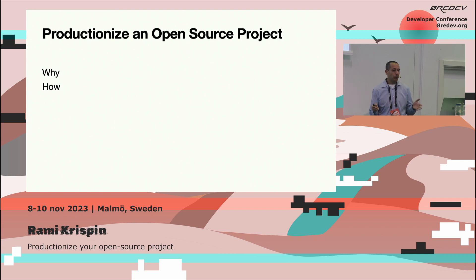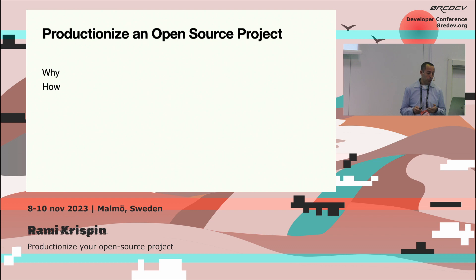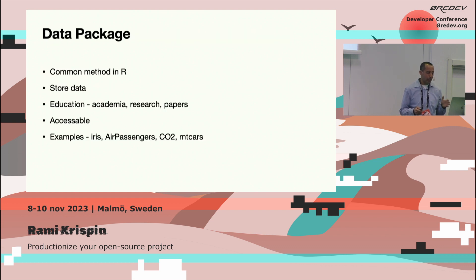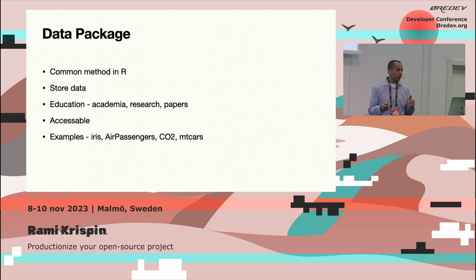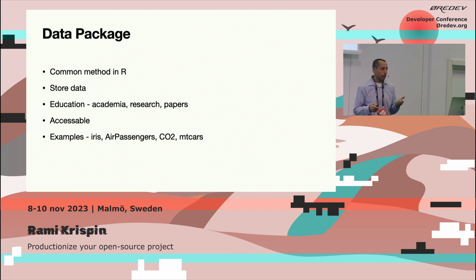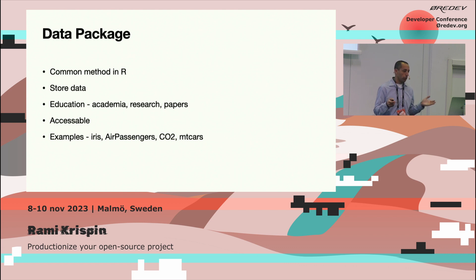The agenda is simple: we'll talk about why you want to productionize your open source project — using tools like Docker, GitHub Actions, and adding automation — and then how to do it. I'll give some background on what a data package is because it's very unique to R. The idea is that you store data as a package and it's accessible. The main use cases are education and research — if you're submitting to a journal, you can wrap your data so people can reproduce it.